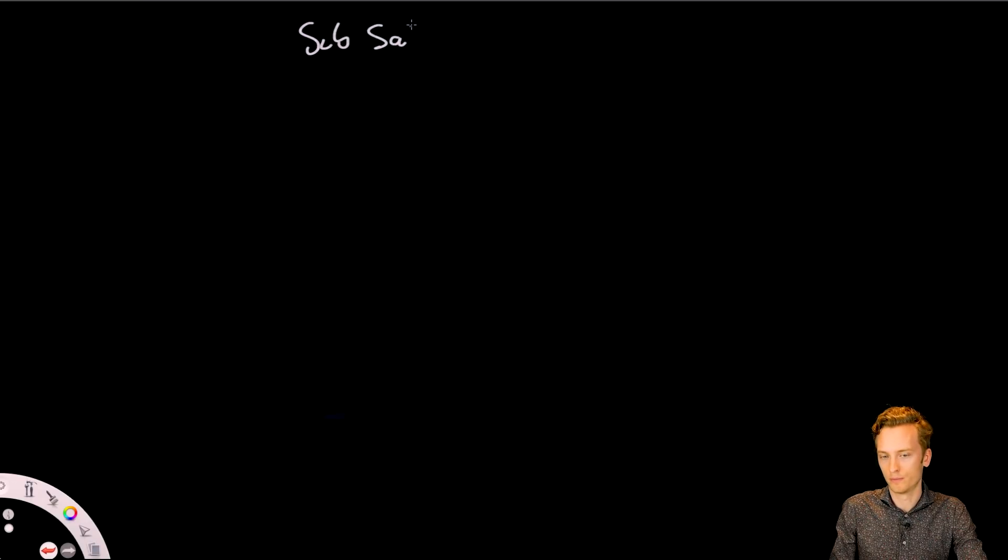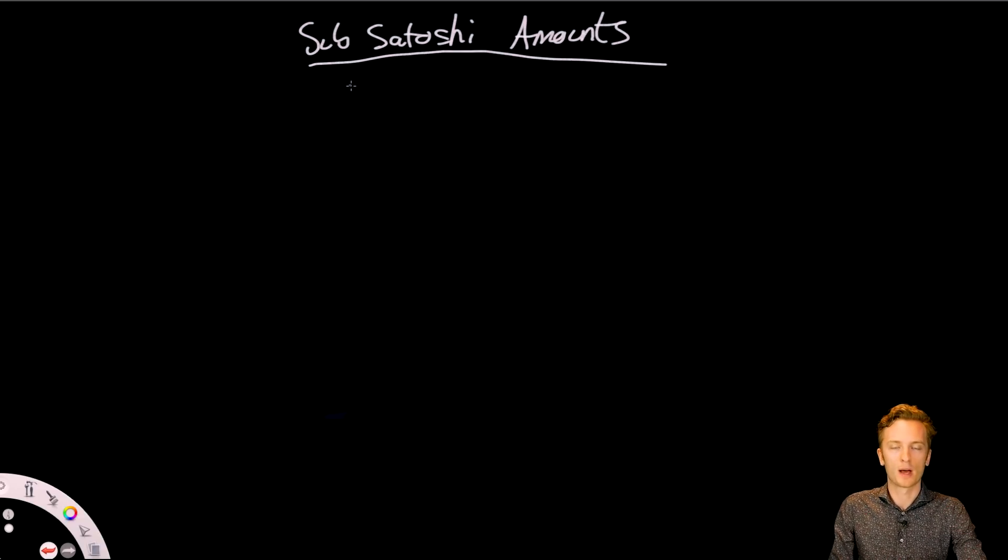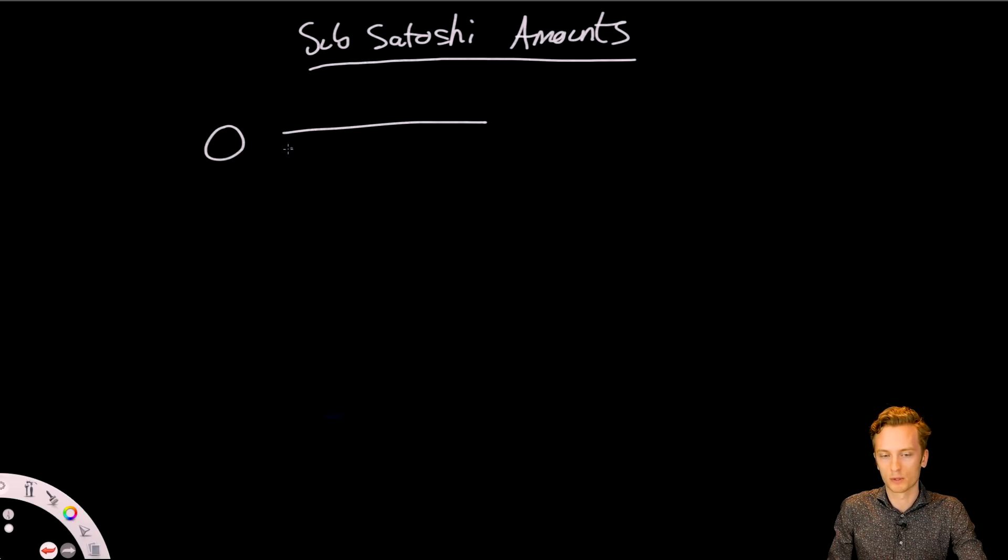So let's see here. Sub-Satoshi amounts. Right? And this is a fascinating topic. And I'm not going to go into exactly how the Lightning Network works, but if you have a Lightning channel, which is a payment channel between two people, so we have Bob and Alice, they have a payment channel here. And they have a balance. So they both have funded...